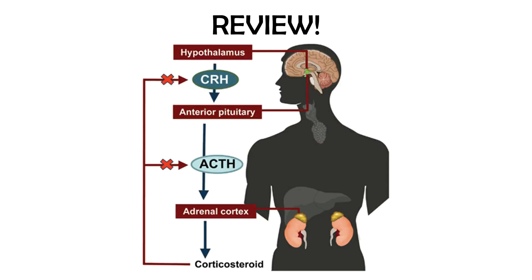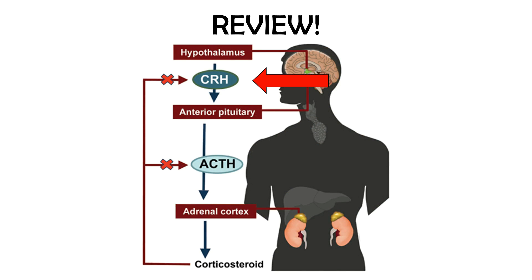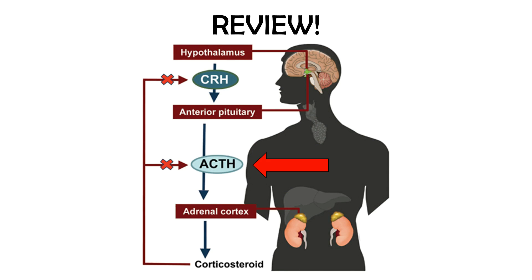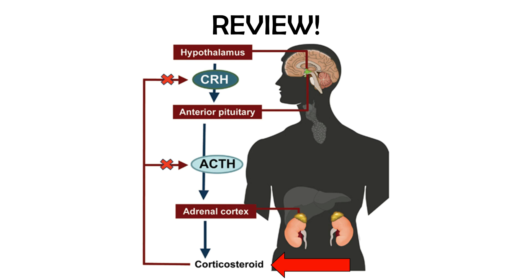Alright, good job. Let's do a review. The hypothalamus releases CRH to the pituitary gland, which releases ACTH to the adrenal gland, which releases cortisol back and stops the negative feedback loop.